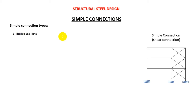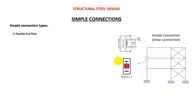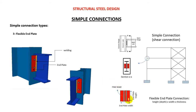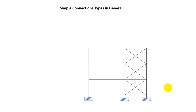The third type is the flexible end plate, which — along with the fin plate — is covered in the green book for simple joints. The flexible end plate has welding and a plate that extends within the depth of the beam. Importantly, for the fin plate the plate is welded to the column, whereas for the flexible end plate the plate is welded to the beam. The fillet weld dimensions are: width × thickness × height.